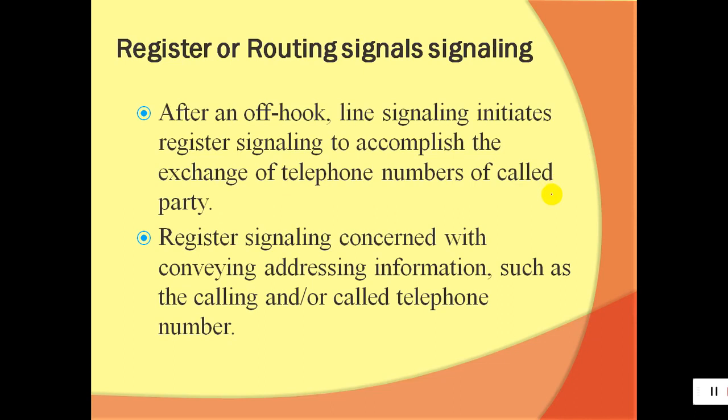Register or routing signaling is concerned with conveying address information — the calling or called telephone number. When you dial a number, it is conveyed through the right chain to find the called subscriber. This information is stored and forwarded by many registers to find the route. The basic information is the dial code, which indicates to subsequent switching centers the required destination — whether a local code, STD code, or ISD code.